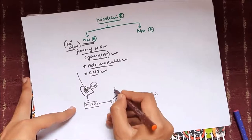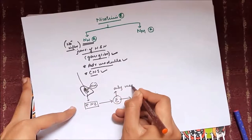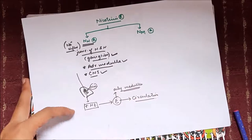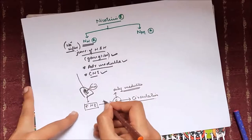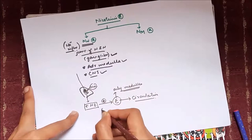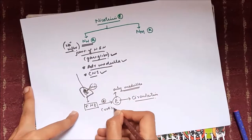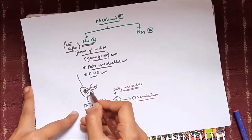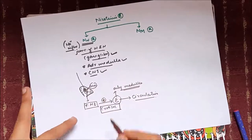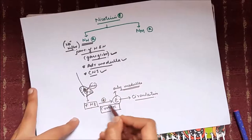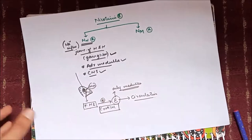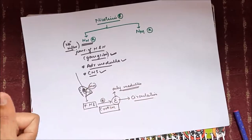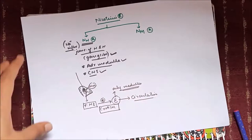An interesting fact is that epinephrine is synthesized only in the adrenal medulla, whereas norepinephrine is synthesized in almost every tissue of the body. This is because the conversion of norepinephrine to epinephrine requires cortisol, which is secreted only by the adrenal cortex.